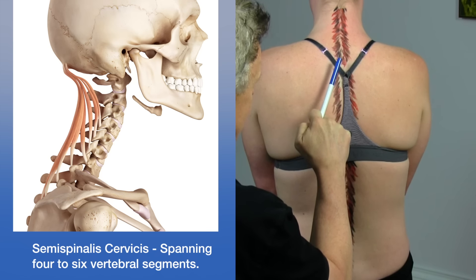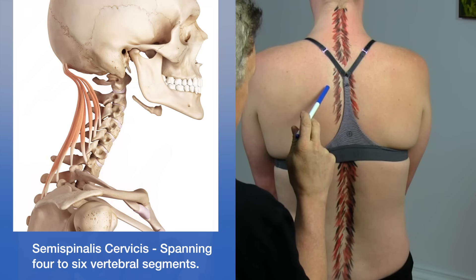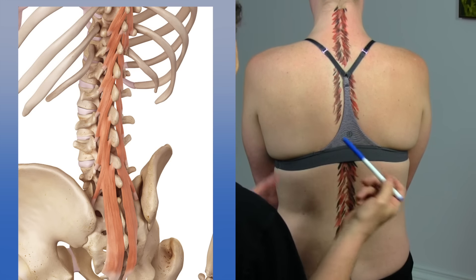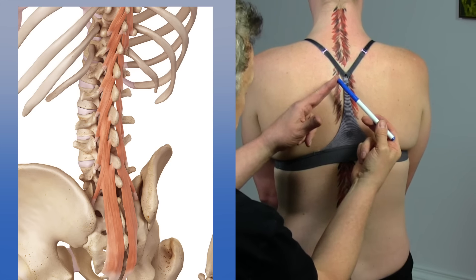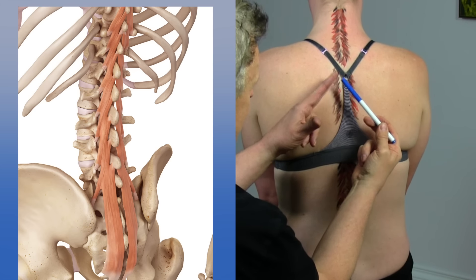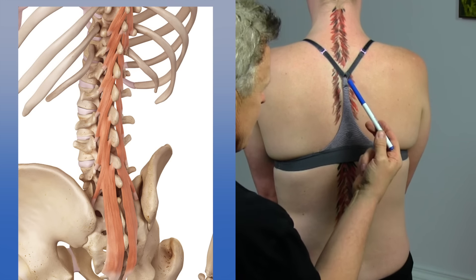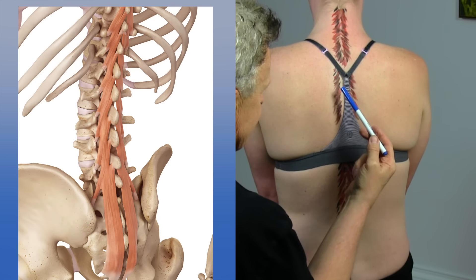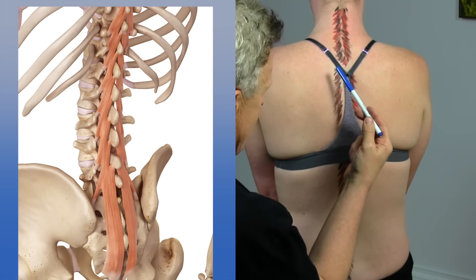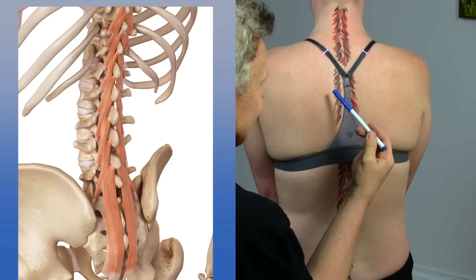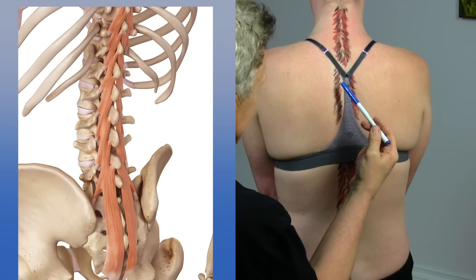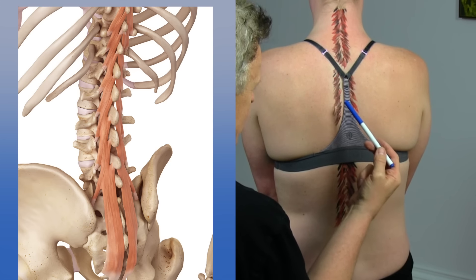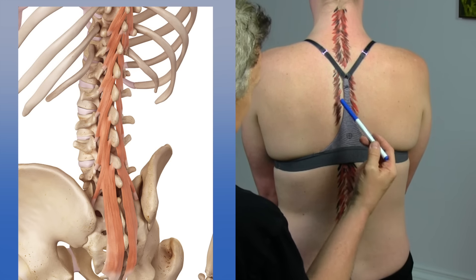The rotatories are more horizontal in terms of fiber orientation and pass toward the laminae of the vertebrae above. The multifidus is commonly related to spinal stability and is a very important muscle. The multifidus passes through the spinous processes of vertebrae located two to four levels above, giving it a different fiber orientation.